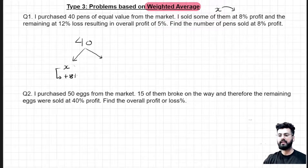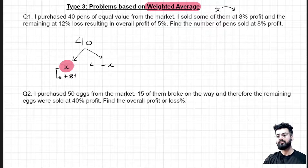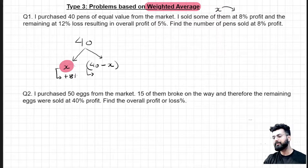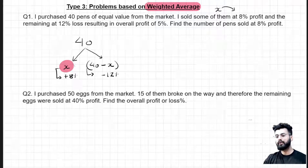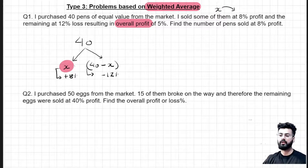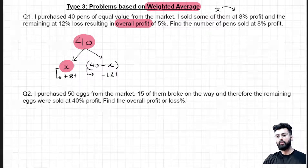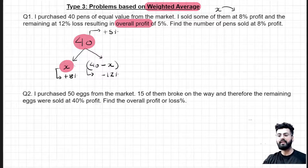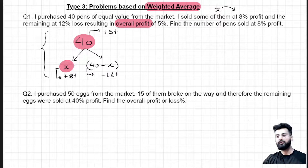Now, if out of 40, X pens are sold, how many are left? Just remove these X number of pens from 40 — these are the remaining pens. It is given that I sold these remaining pens at a loss of 12%. To represent loss, I have used a negative sign. Resulting in an overall profit of 5%. Whenever you find the word 'overall', it means over the whole quantity. So I had made a profit of 5% in the overall quantity of 40 pens. You just have to write down this complete thing in a mathematical form, in one line expression.